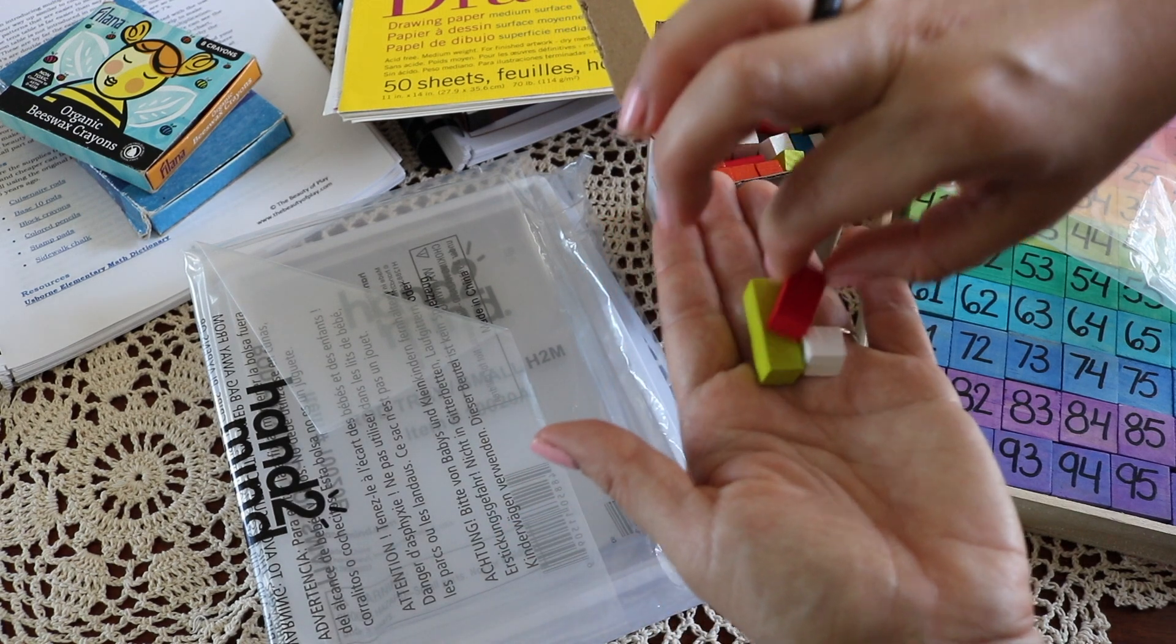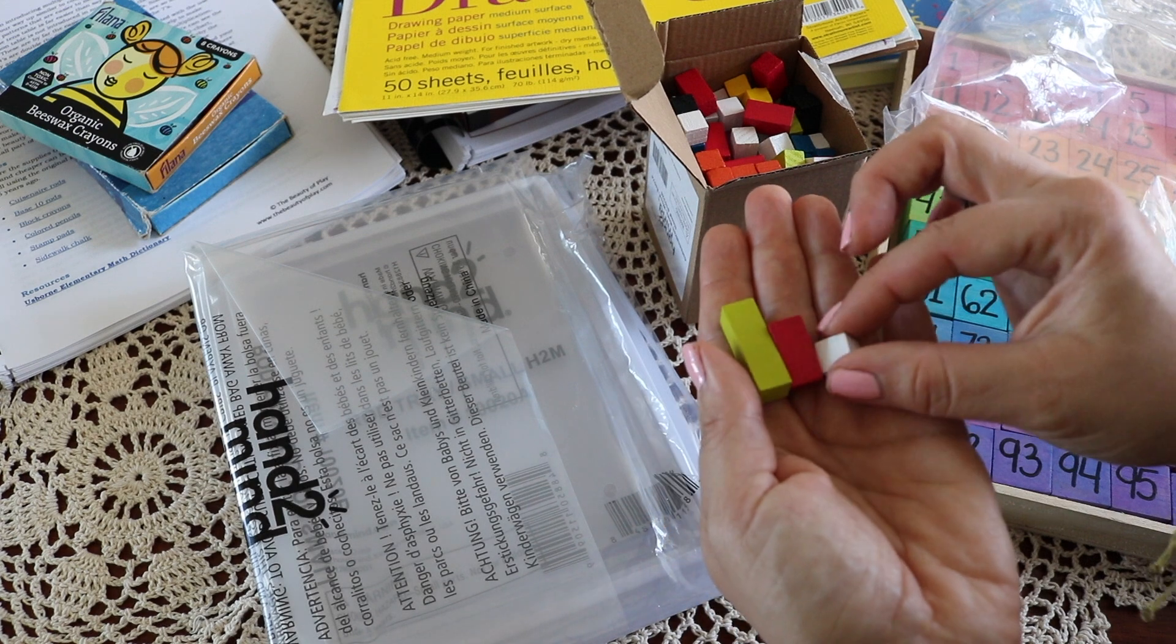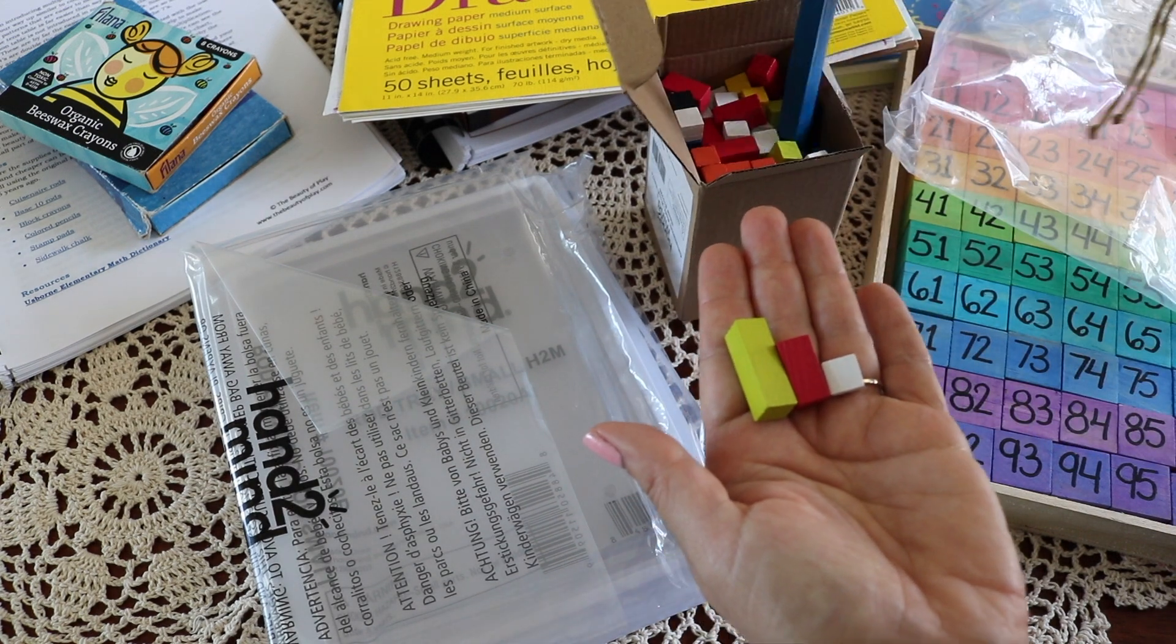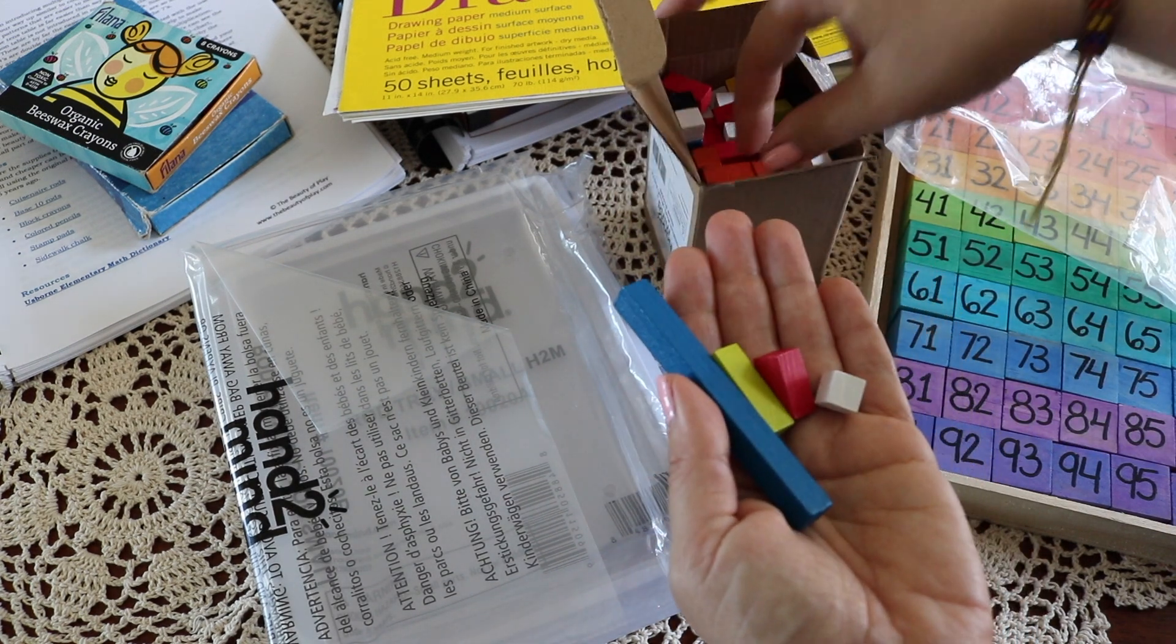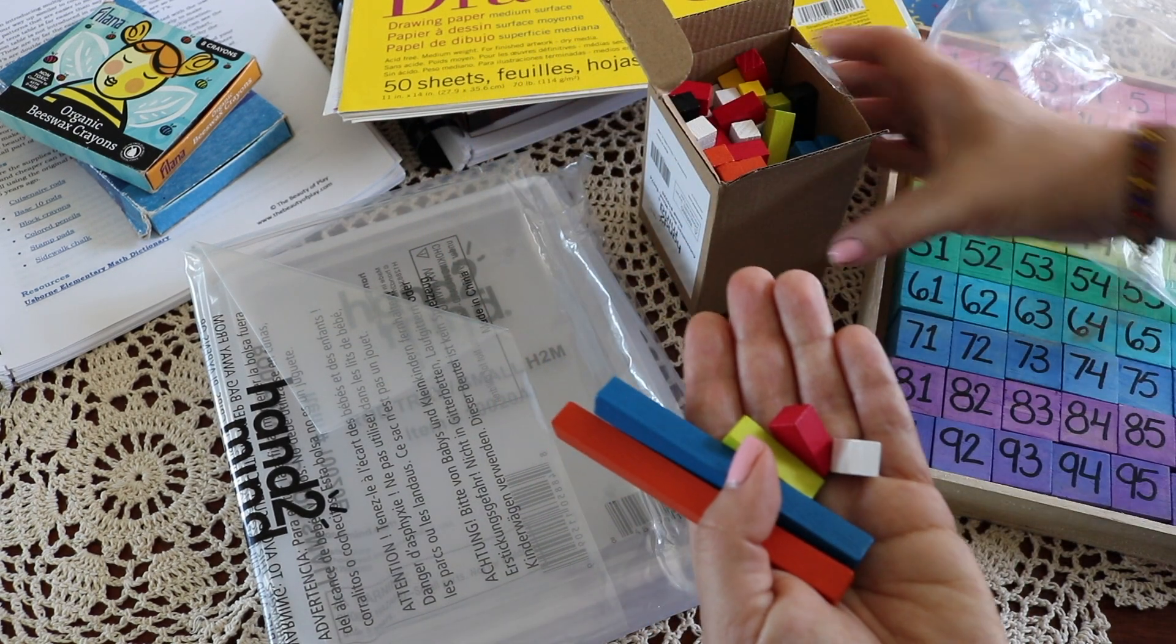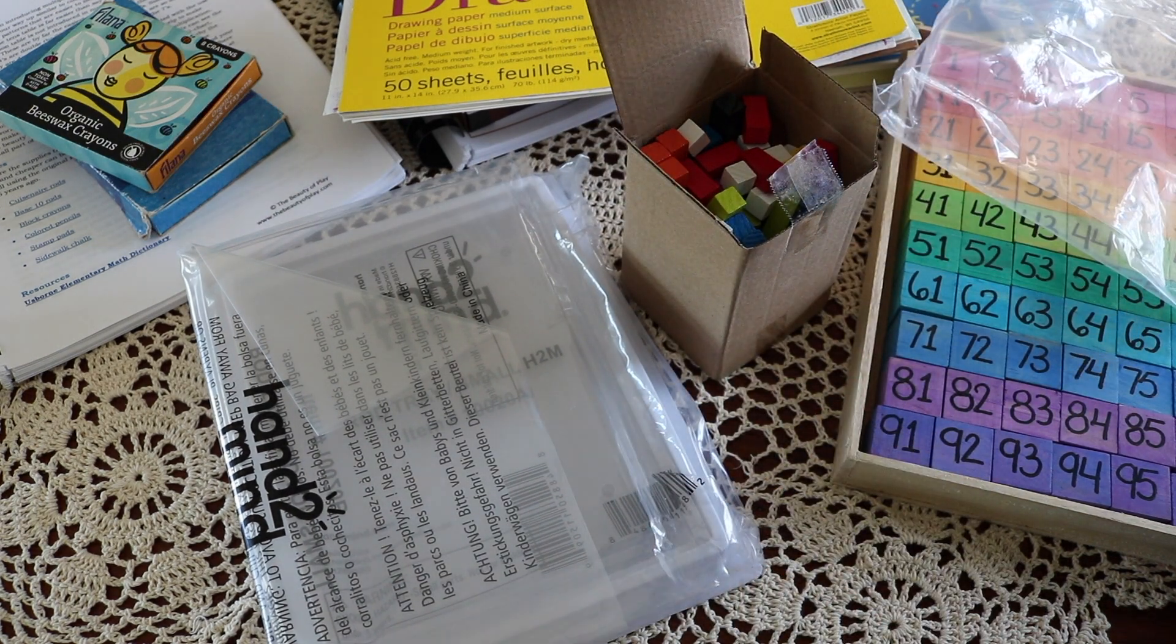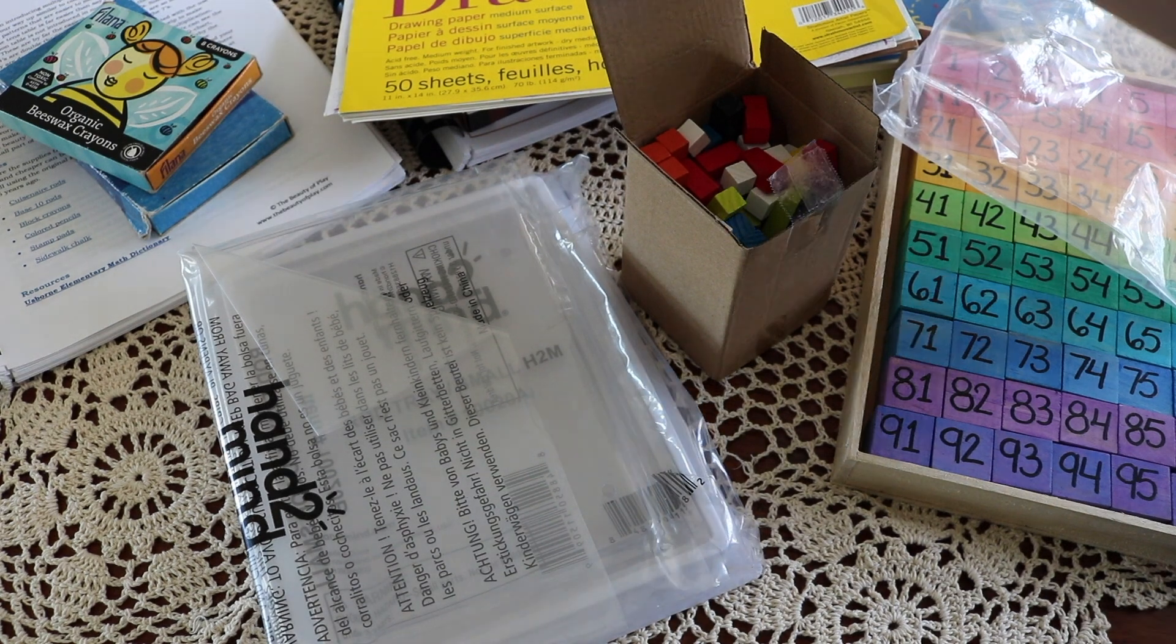I purchased a set on Amazon from Hand to Mind. The issue is this set does not include enough pieces. It's only a 72-piece set and I need double that. So I've already ordered a bigger set from Learning Resources, a 155-piece set, and I recommend that set instead.